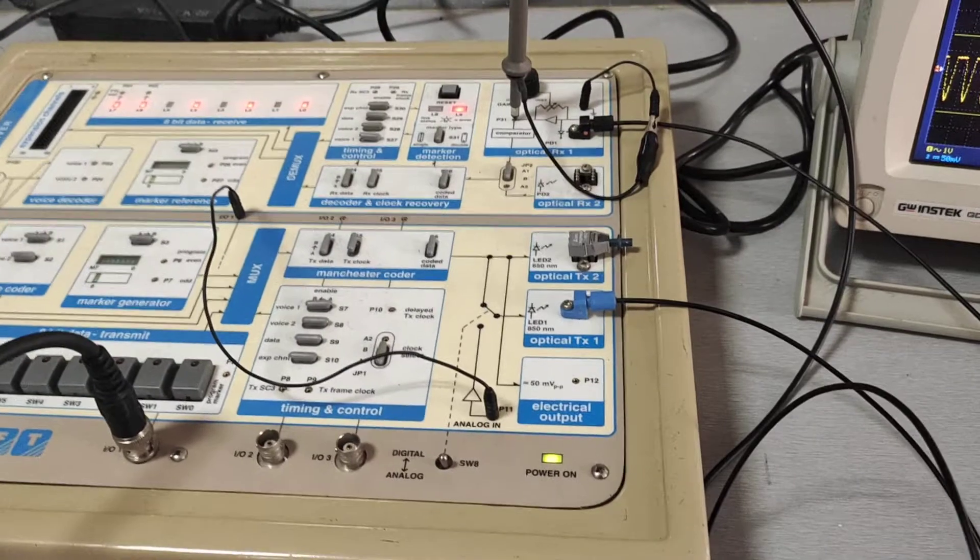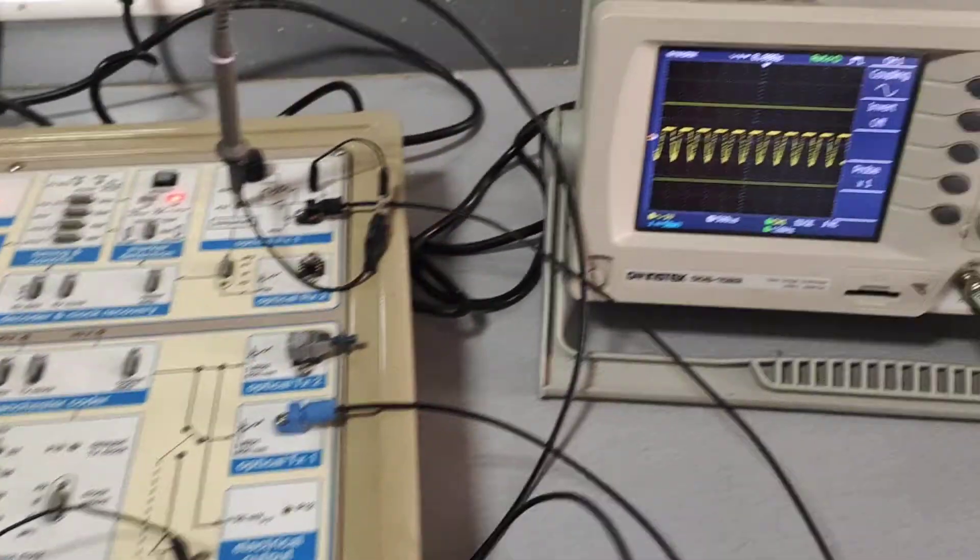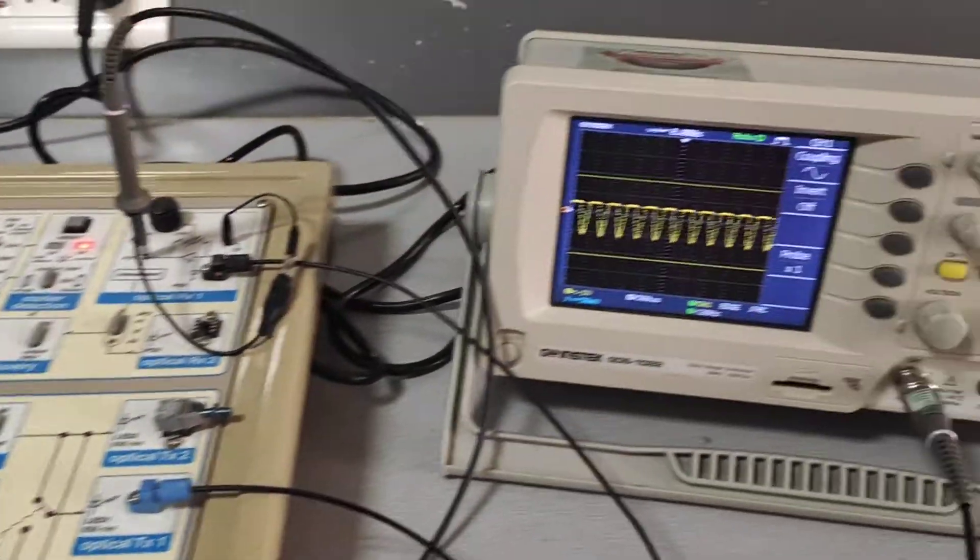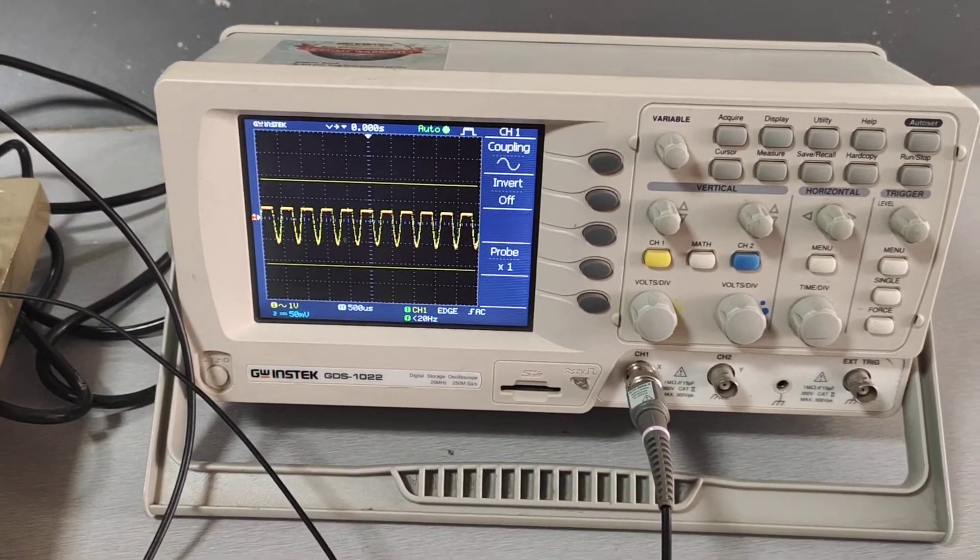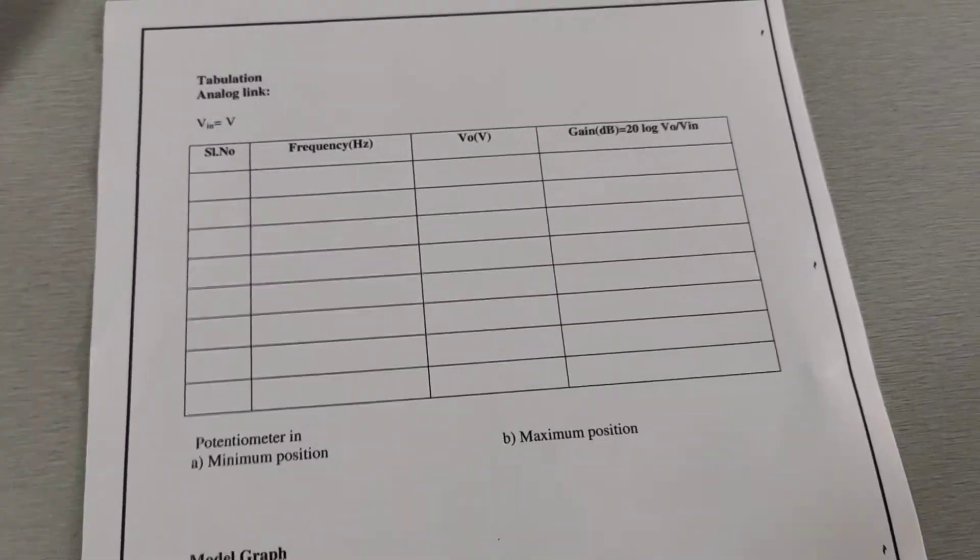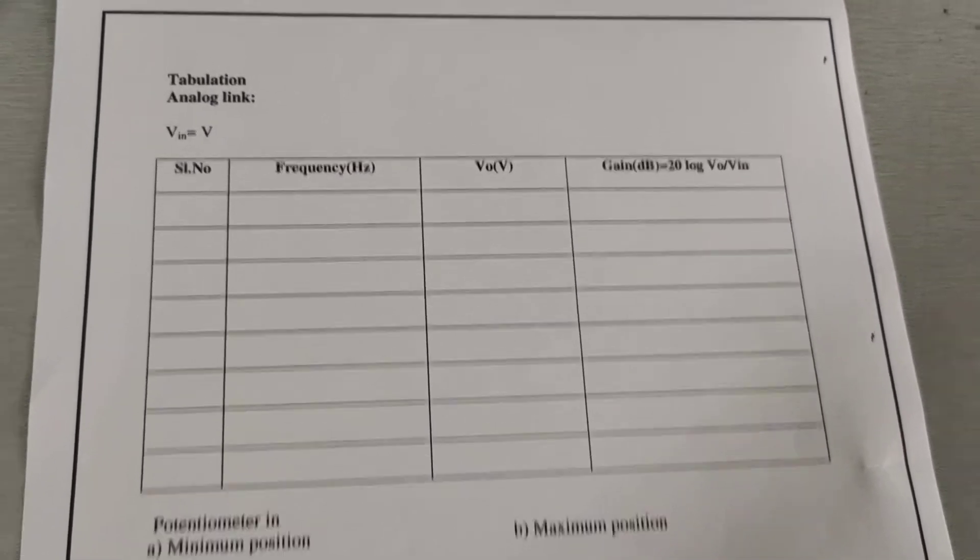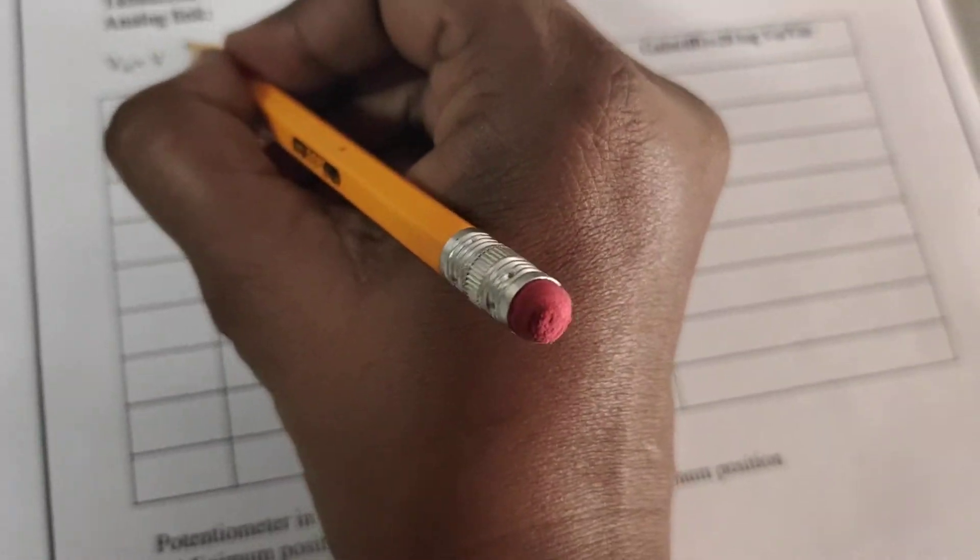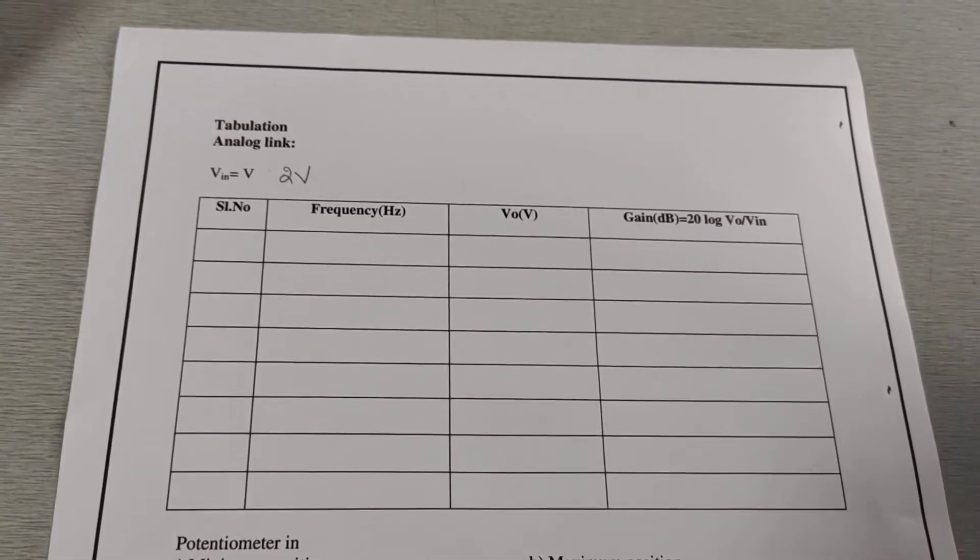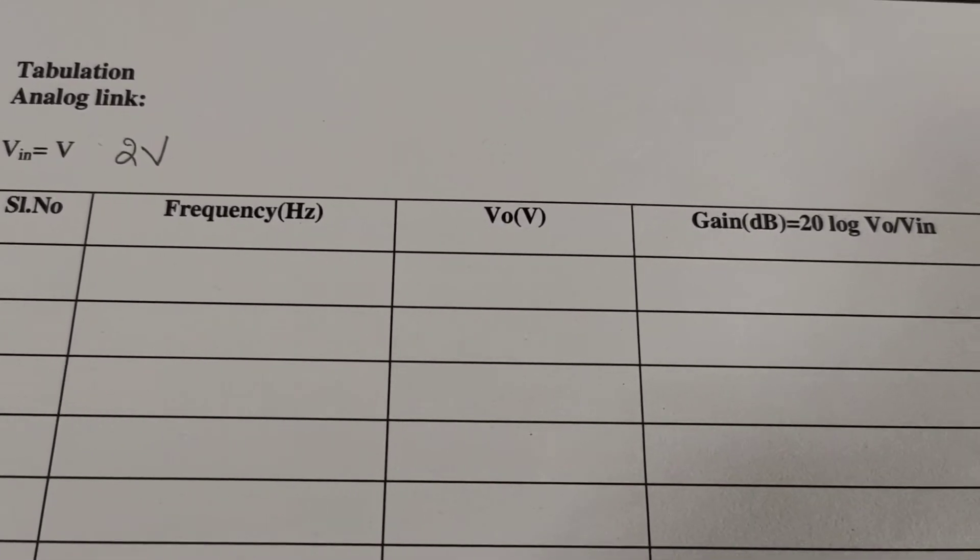We vary the frequency from lower range to higher range and observe the corresponding output voltage. You note down the frequency, VIN, and V0. Here, VIN is 2 volt. After measuring V0 output voltage, we have to calculate gain. Gain formula is 20 log of V0 by VIN. After completing this observation, we have to plot the graph.